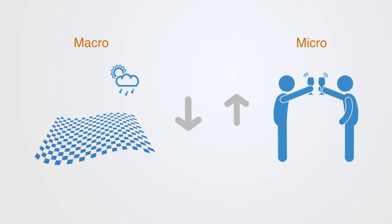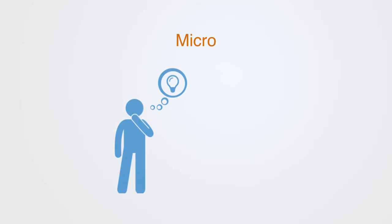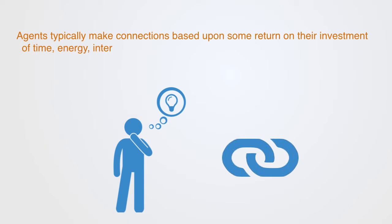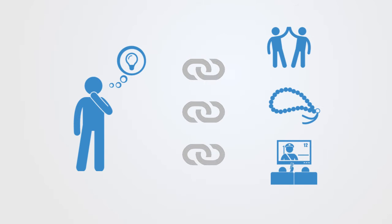Within any social network, we have some agent that is choosing to make that connection. Agents typically make connections based upon some assessment of the return on their investment of time, energy, interest, social capital, or some other resource that they value. We make friends with people whose company we like. We believe in ideologies that we value. We watch television channels that we find engaging. These are all connections that we make because we value what we get more than what we have to give in making the connection.